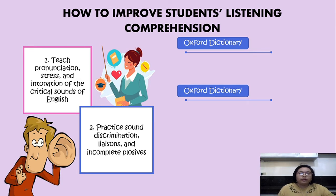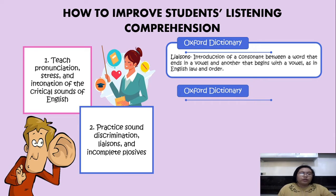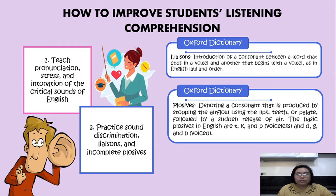Next is liaison. According to the Oxford Dictionary, liaison is the introduction of a consonant between a word that ends in a vowel and another that begins with a vowel, as in English 'law and order.' So liaison is the linking of sounds or words. Basically, the linking of words and sounds happens when a consonant that is normally silent at the end of a word is sounded because the next word begins with a vowel.